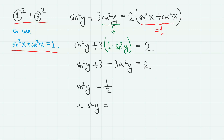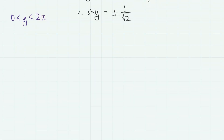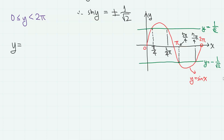Therefore, sine y equals plus or minus 1 over square root of 2. Since the range of y is from 0 to 2π, the possible values for y are, using the graph, y equals π over 4, 3π over 4, 5π over 4, and 7π over 4.